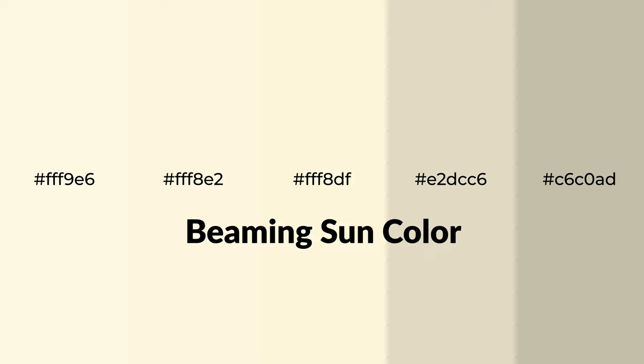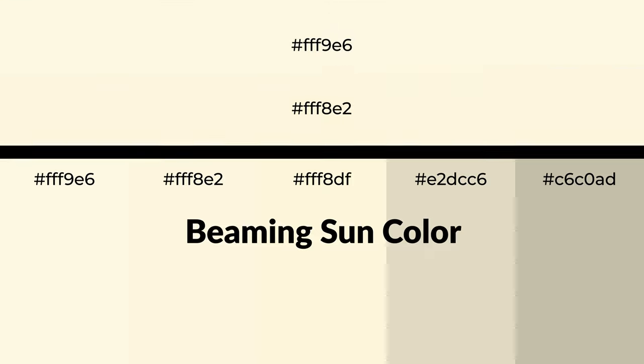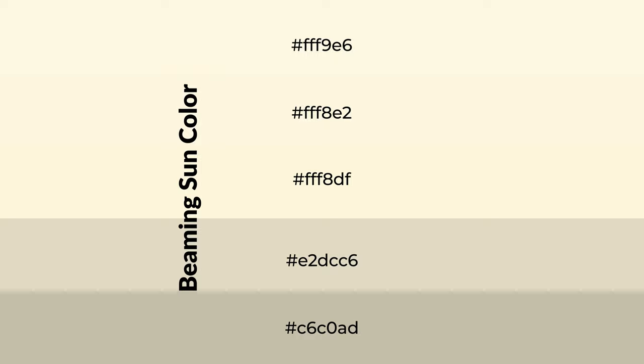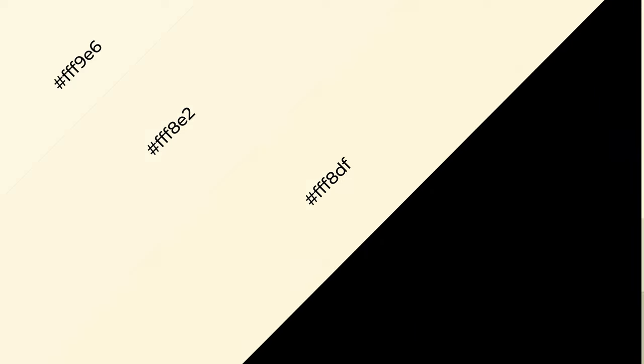Warm shades of beaming sun color with yellow hue for your next project. To generate tints of a color, we add white to the color. Tints create light and exquisite emotions. To generate shades of a color, we add black to the color, and it is used in patterns, 3D effects, and layers. Shades create depth and drama.